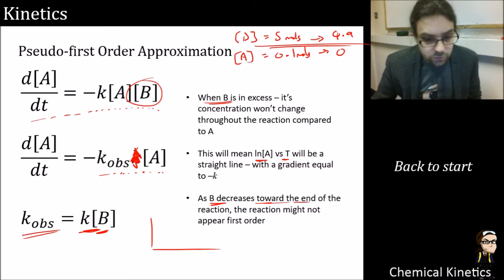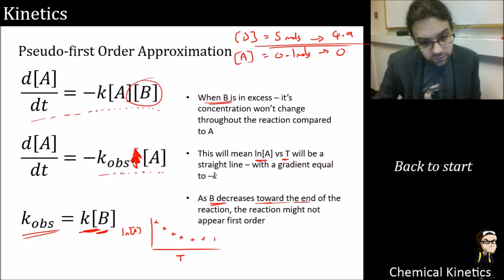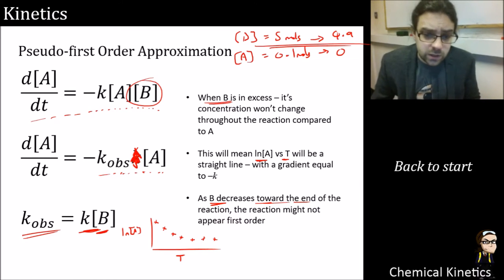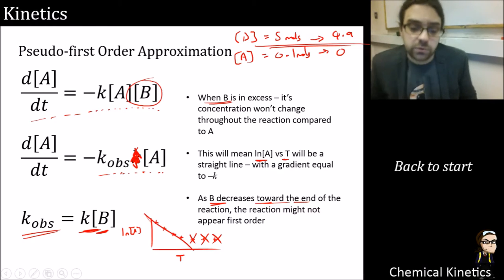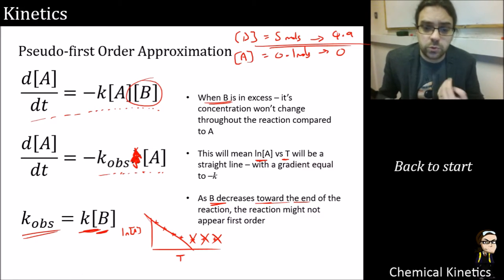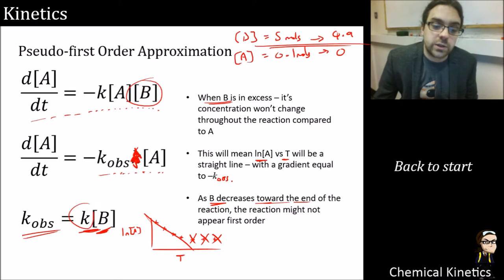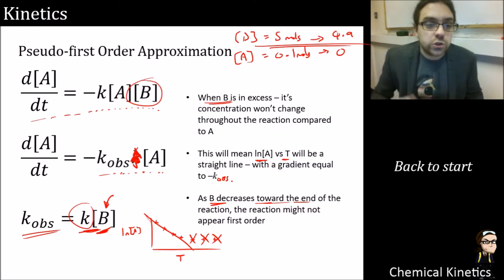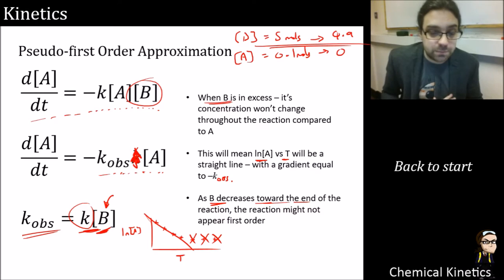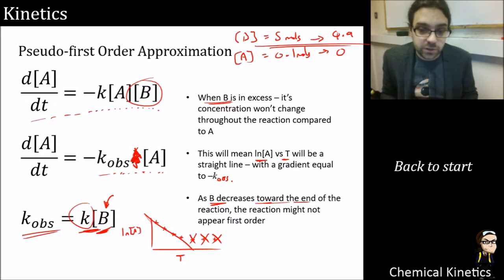B will decrease towards the end of the reaction so you might start to see a little bit of a curve away from linearity. In that case it's perfectly possible to discard those data points and just plot a straight line through the linear portion — that gives you k_obs. You can feed that back into the equation to get your real rate constant since you know what B is. It's just a mathematical trick that works out well experimentally.